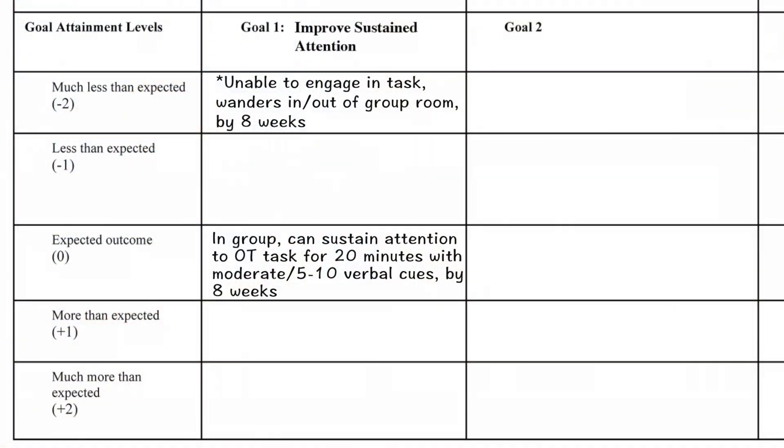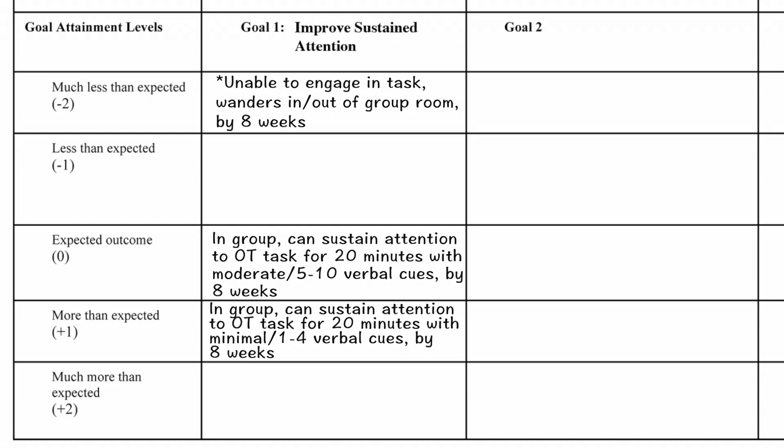Now that we have the zero established, what do you think would be a better than expected outcome for Kevin? This is going to be our plus one. I would say that Kevin would be able to sustain attention in group session for 20 minutes with only one to four verbal cues to remain on task by the end of eight weeks. That sounds good — go ahead and write that in. Now what do you think would be Kevin's much more than expected outcome? This is the plus two — way better than anticipated, possible but highly unlikely. I think Kevin will be able to sustain attention in group session for 20 minutes with no verbal cues by the end of eight weeks. That's going to be pretty difficult, but that's what plus two is all about — go ahead and write that in.